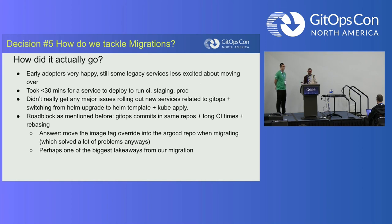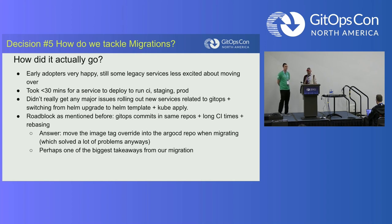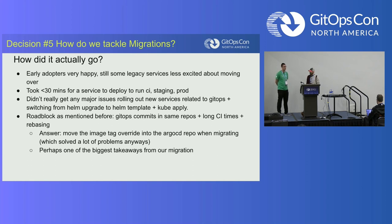Did developers like it? Early adopters super loved it — they had felt the pain of the legacy system and saw real improvements. There are a couple of services less excited about moving over; change is hard. We got deployment time down to less than 30 minutes for a full cycle: CI, staging, and production. We didn't get any major issues rolling out new services related to GitOps, which was better than expected.